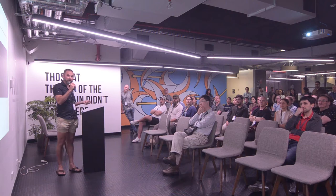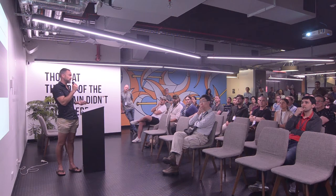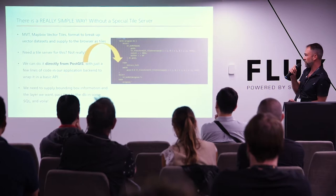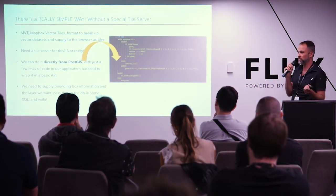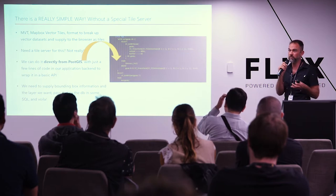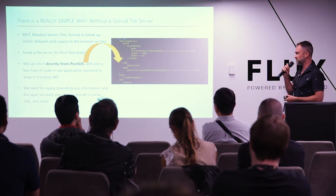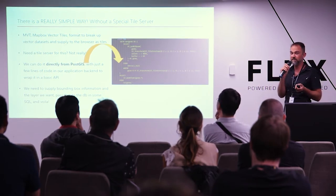Well, there's a really simple way to do it without a special tile server — something called Mapbox Vector Tiles. PostGIS now supports this directly. This isn't totally cutting edge or anything, but it's just a good simple way of doing things. So we don't really need a tile server for it. We can actually do it directly from PostGIS, where we can make our query and the rows that we want to return — we can return them as vector tiles for our view extent. We just need to supply bounding box information and the layer we want and pass that to the database in some SQL.